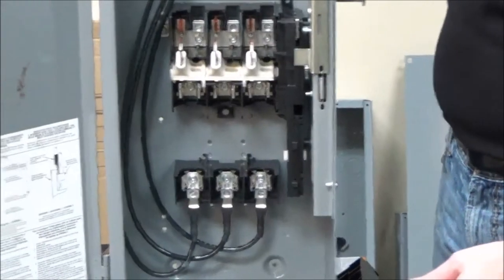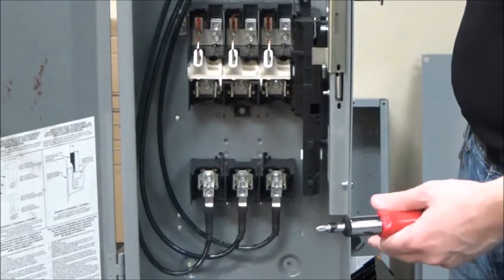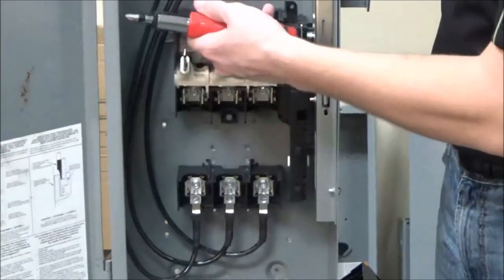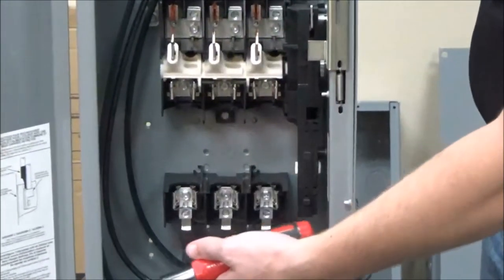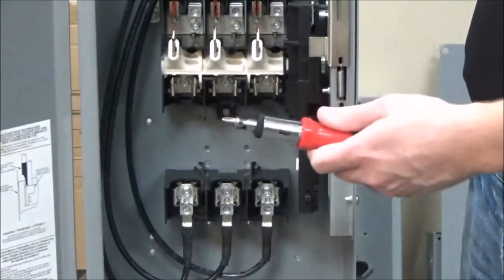After removing the arc shields, you will then remove the lugs on the lower switch base assemblies and load base assemblies using a Phillips head screwdriver.